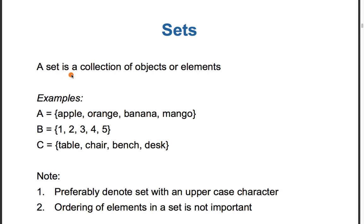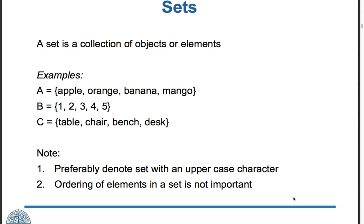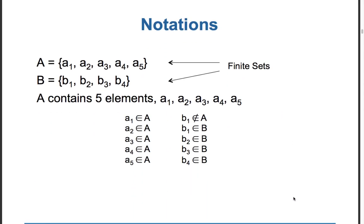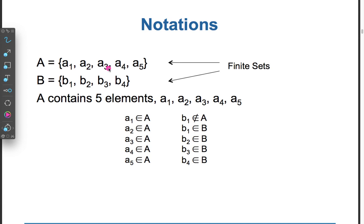A set is a collection of objects or elements. For example, A is equal to {apple, orange, banana, mango}, B is equal to {1, 2, 3, 4, 5}, C is equal to {table, chair, bench, desk}. Preferably, denote a set with an uppercase character. The ordering of elements in a set is not important. Notation: A = {a1, a2, a3, a4, a5}, B = {b1, b2, b3, b4}. Both are finite sets. A contains five elements: a1, a2, a3, a4, a5.